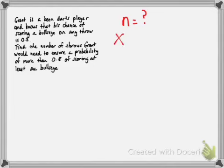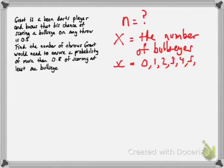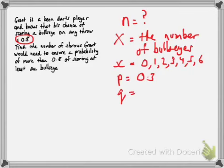Our variable here is the number of bullseyes. He takes six throws, so the value x can take on is 0, 1, 2, 3, 4, 5, or 6. The probability of success — throwing a bullseye — is 0.3, and the probability of failure is 0.7.